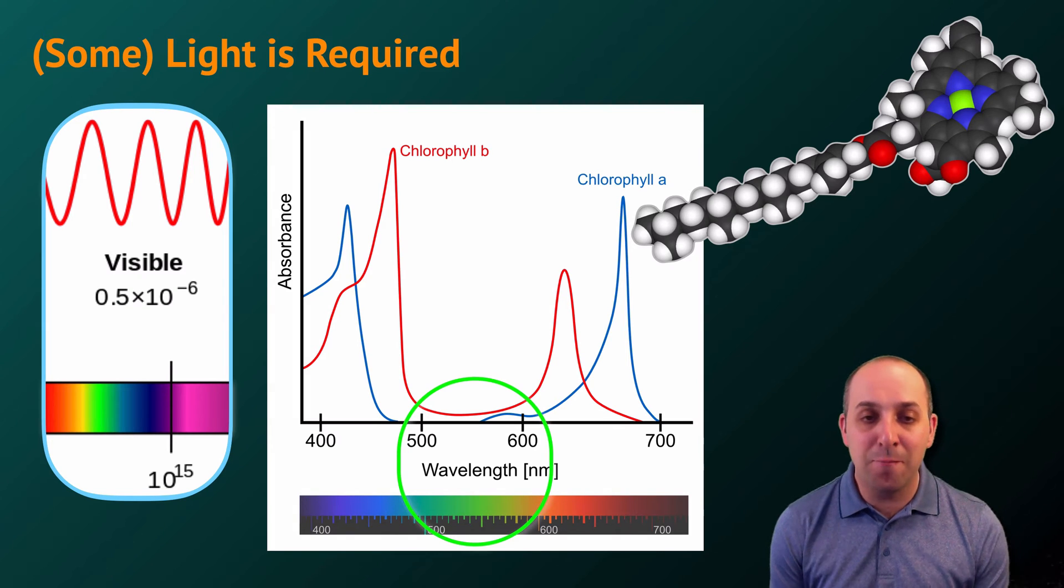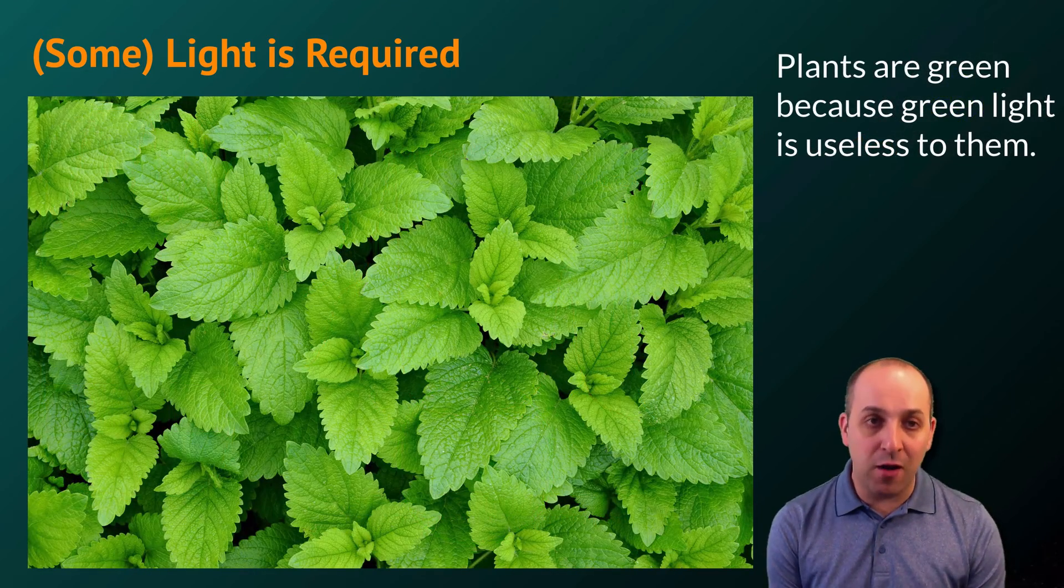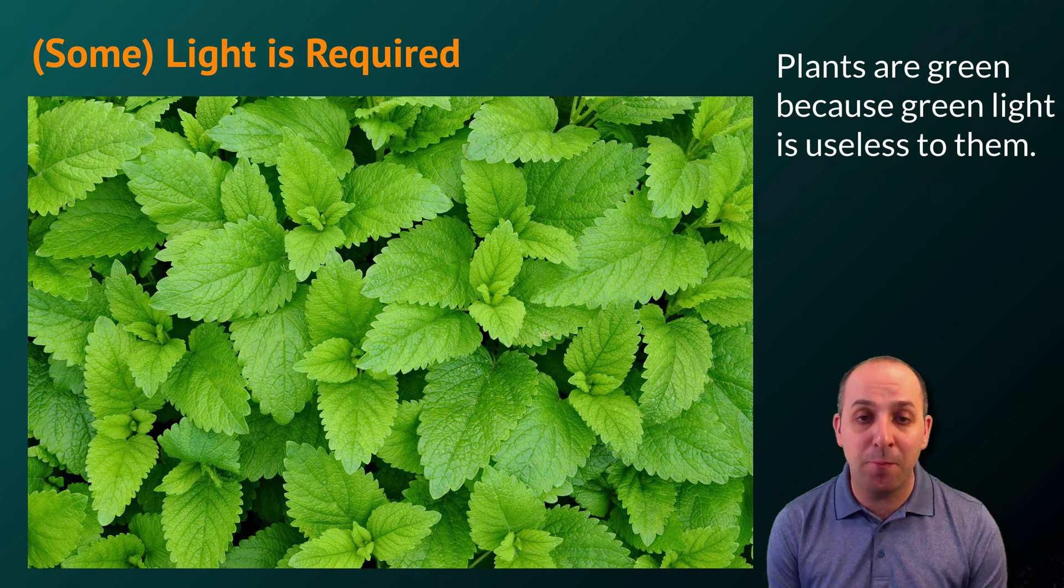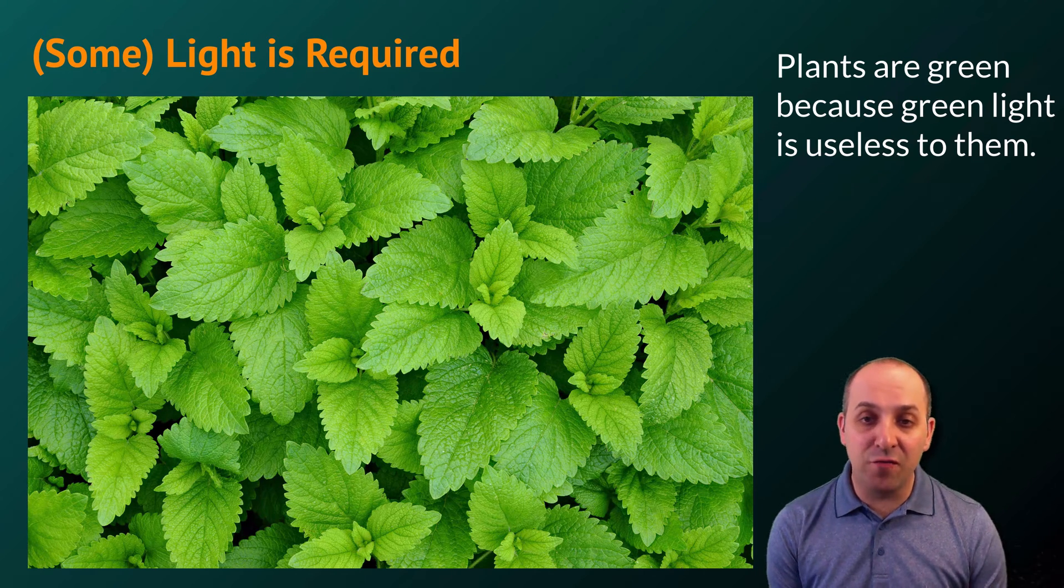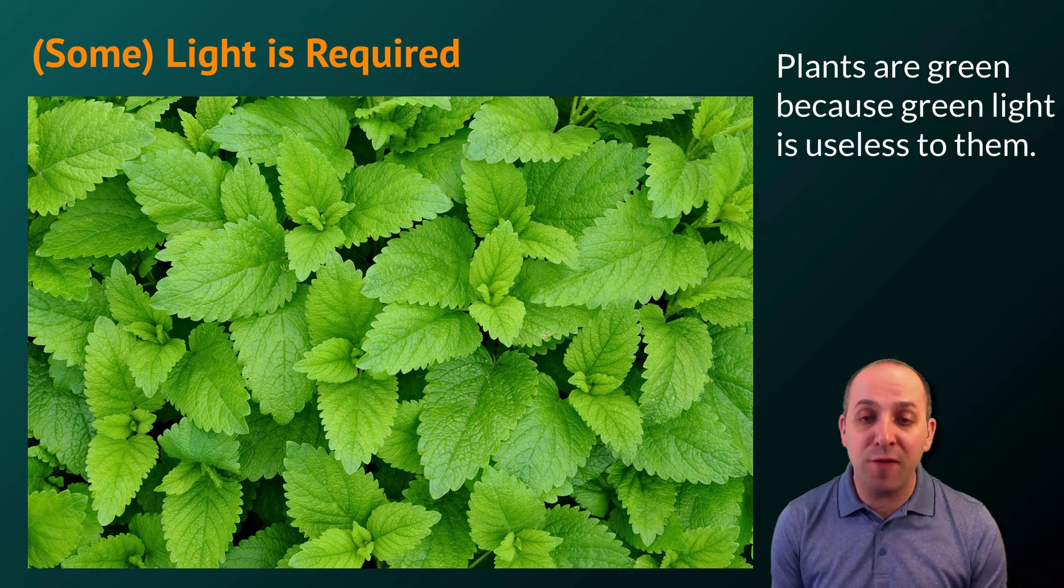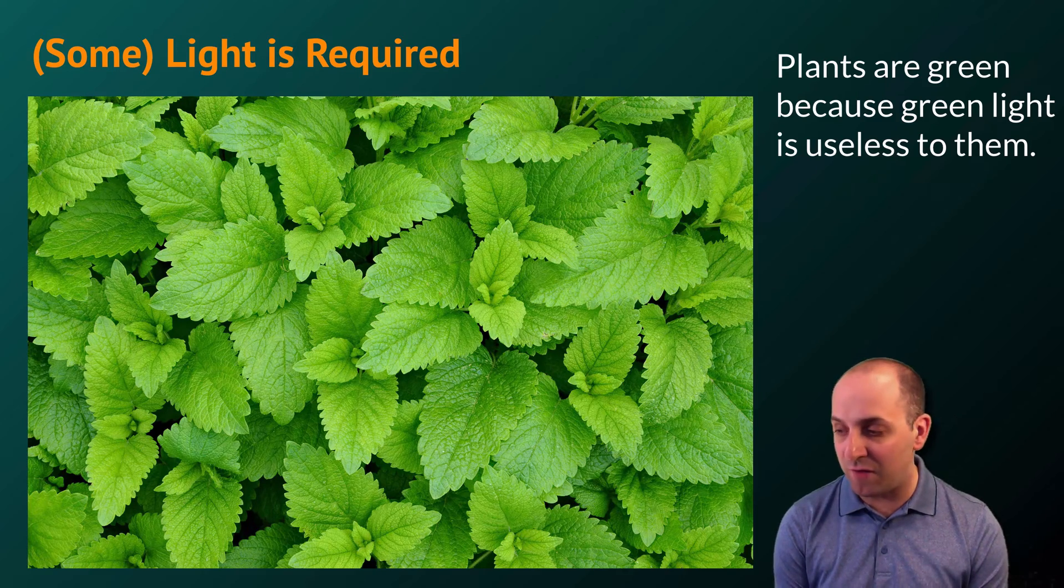In particular, wavelengths in the middle of the visible light spectrum, greenish wavelengths, are not absorbed by chlorophyll at all. This is why plants are green. Plants are green because their pigment molecules that are driving photosynthesis are absorbing red and blue wavelengths of light from the light that hits them and reflecting back out green wavelengths of light instead.